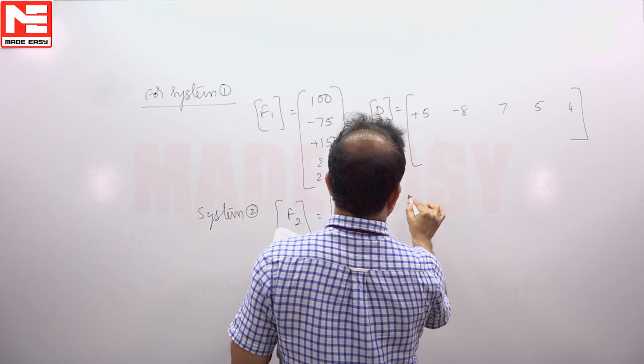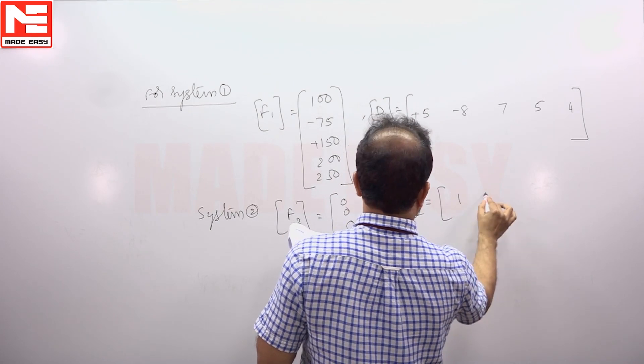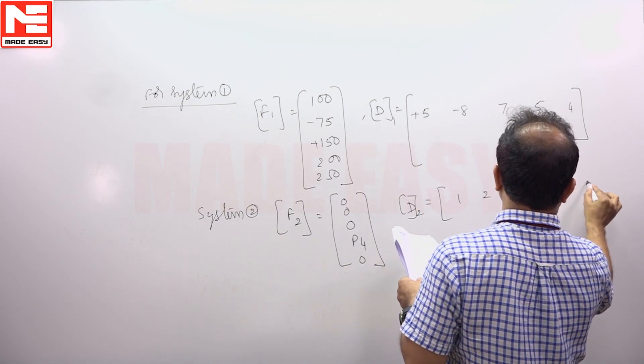And corresponding to that, the displacements D2, D1 let us say, he has given: 1, 2, minus 3, 4, 2.